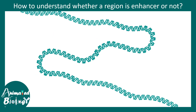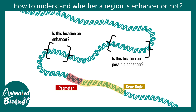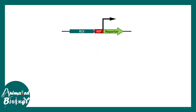Since we understand the concept of enhancers, the question is: how do we determine whether a sequence is actually an enhancer? Given a gene body, how would you know which upstream or downstream sequence is an enhancer? People used to study enhancers in different ways in the past, and now do so using high-throughput techniques. One classical approach is the enhancer trap construct.